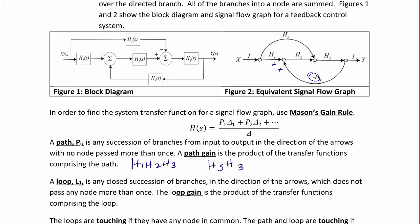A loop is any closed succession of branches in the direction of the arrows, which does not pass any node more than once. The loop gain is the product of the transfer functions comprising the loop.